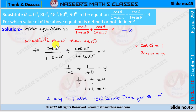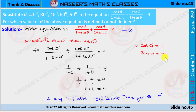Now substitute θ = 0° in equation 1. It can be written as cos 0° / (1 − sin 0°) + cos 0° / (1 + sin 0°) = 4. We already know that cos 0° = 1 and sin 0° = 0. Now we substitute these values, and we get 1/(1 − 0) + 1/(1 + 0) = 4.